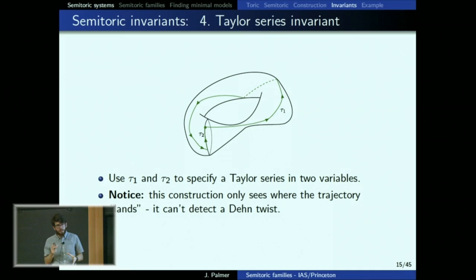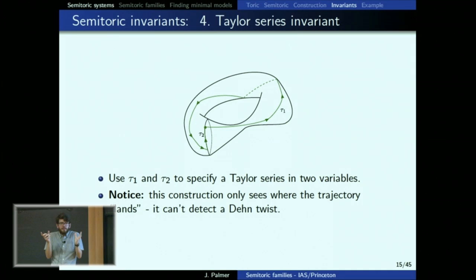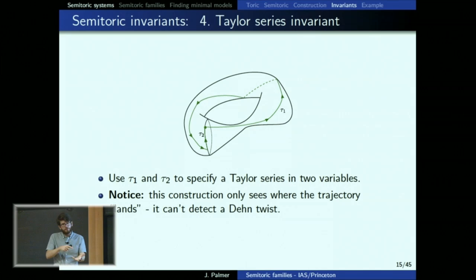When Vũ Ngọc was doing this in 2003, he was looking at a neighborhood of a focus-focus fiber in isolation. You can't detect a Dehn twist in this local setting because it's not embedded anywhere — it doesn't make sense to ask how many times a cycle wraps. This perfectly sets up the last invariant: the twisting index.